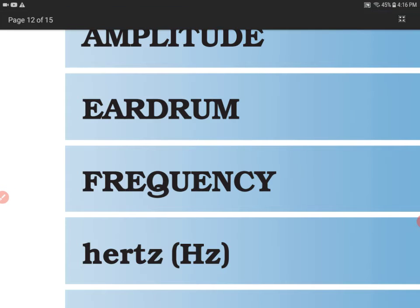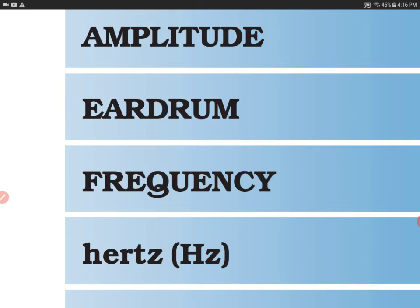The second term is eardrum, which we call the tympanic membrane — it helps us in listening. The eardrum vibrates when sound waves travel through the auditory canal. These vibrations are then passed to the three bones of the middle ear: malleus, incus, and stapes. The stapes is the smallest bone in our body. These vibrations then reach the cochlea, which amplifies the vibrations and sends electrical impulses through the auditory nerve.